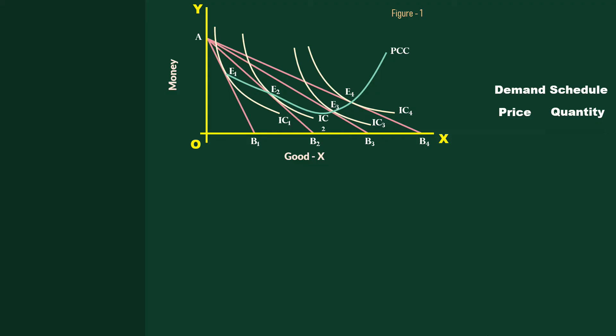To begin with, the consumer is at point E1. He buys M1 quantity of Good X. What is the price? Money at his disposal is OA units. OB1 is the quantity of Good the consumer can buy with entire amount. Then, OA divided by OB1 gives the initial price P4.